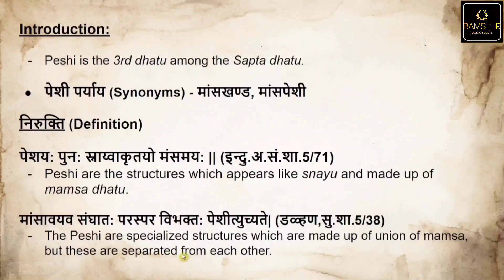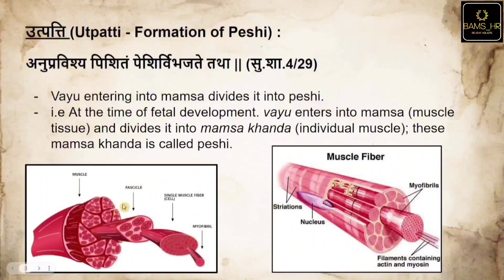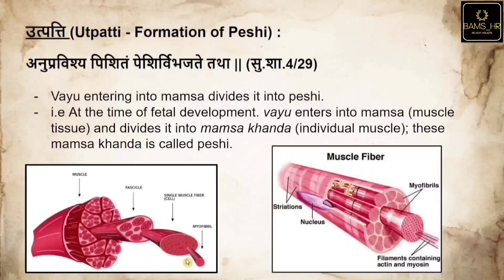Regarding the formation of Peshi: 'Anupravishya vishitham Peshi vibharjate tatha' — Vayu entering the Maamsa divides it into Peshi. At the time of fetal development, Vayu enters the Maamsa (muscle tissue) and divides it into Maamsa Khanda. Maamsa Khanda is an individual muscle fiber — a single muscle fiber is a Peshi. When two to three such Peshi collectively form Maamsa, that part is known as Peshi.